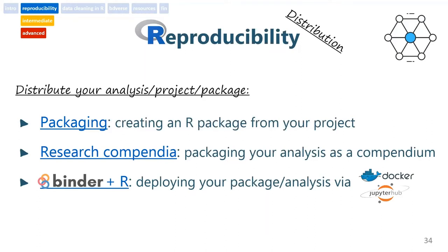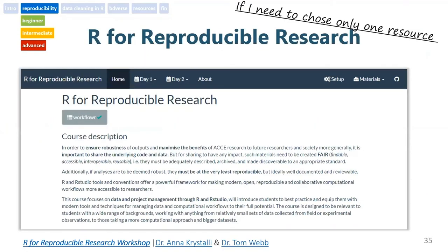The third option is to use Binder, which combines Docker with Jupyter Hub and can give you, in seconds, an environment to run your analysis anytime you need to show it to someone. All the options are great and have great documentation. They might look scary, but once you dig in, you will see that it's not that terrible. If I need to choose only one resource to invoke you on this reproducibility journey, I would choose this one — a workshop created by Dr. Ana Cristale and Dr. Tom Webb about R for reproducible research.